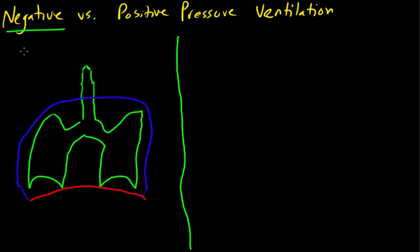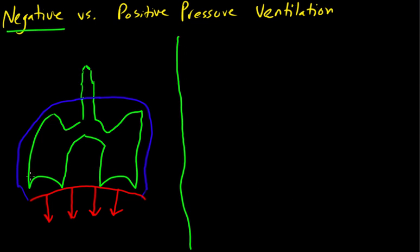Now let's take a look at a normal breath - a physiologic breath. Our diaphragm is going to contract, which brings it downwards. What that does is it's going to create a negative pressure within our closed system. Our lungs are not exposed to the atmosphere. Our diaphragm is going to contract, making this cavity bigger. When we have a bigger cavity, it creates a vacuum. That's how an air compressor works.